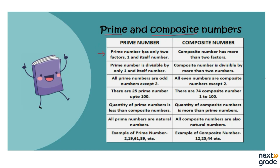First of all, in prime numbers, a prime number has only two factors. How many factors do prime numbers have? Only two. And a composite number has more than two factors. I'll put the greater sign so that you can understand that composite numbers have more than two factors.